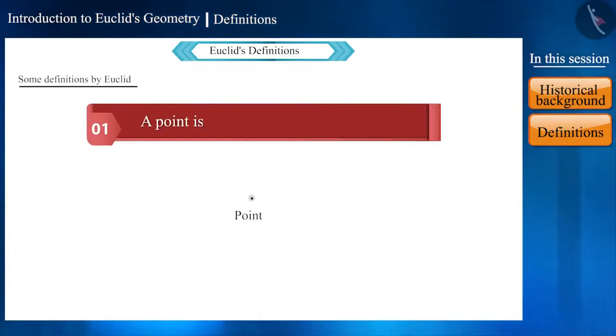Let's look at those definitions. First definition, a point is one which has no area. Here, they have not defined area.